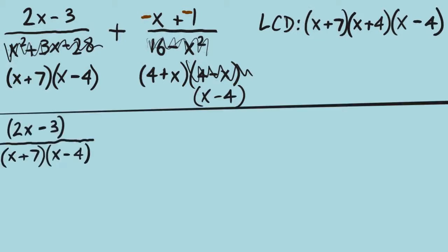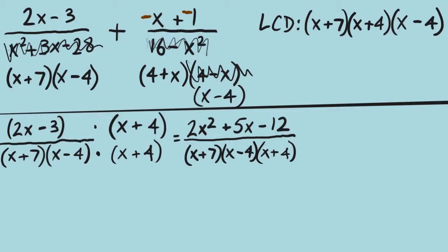Let's get some space and work with these individual fractions. The first one is (2x − 3) over (x + 7)(x − 4). What is missing from our denominator that our LCD has? The x plus 4. Multiply that to top and bottom. Our denominator will stay factored, and for the numerator we use FOIL: 2x squared plus 8x minus 3x gives us positive 5x, and negative 3 times positive 4 gives the minus 12.